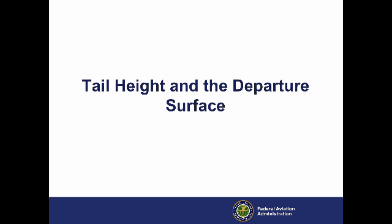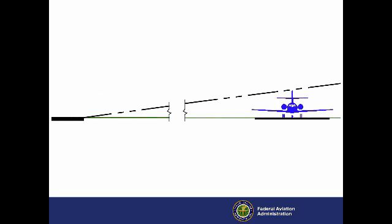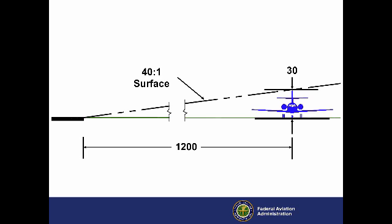The tails of airplanes on the EAT must not penetrate the 40-to-1 departure surface. This design example, based on Airplane Design Group 2, or ADG-2, shows an unscaled elevation view of an airplane on the EAT. This airplane has the maximum tail height of 30 feet. A 40-to-1 surface rises 30 feet in a horizontal distance of 1,200 feet. Assuming the EAT is at the same elevation as the end of the runway, the airplane must be 1,200 feet from the end of the runway to avoid surface penetrations while the airplane is under the departure surface.